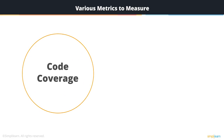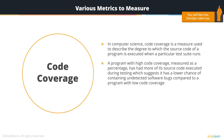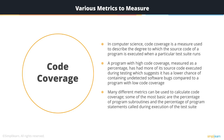Then you have code coverage. In computer science, code coverage is a measure used to describe the degree to which the source code of the program is executed when a particular test suite runs. A program with high code coverage, measured as a percentage, has more of its source code executed during testing, which suggests it has a lower chance of containing undetected software bugs. Some of the most basic metrics for code coverage are the percentage of subroutines and the percentage of program statements called during execution.